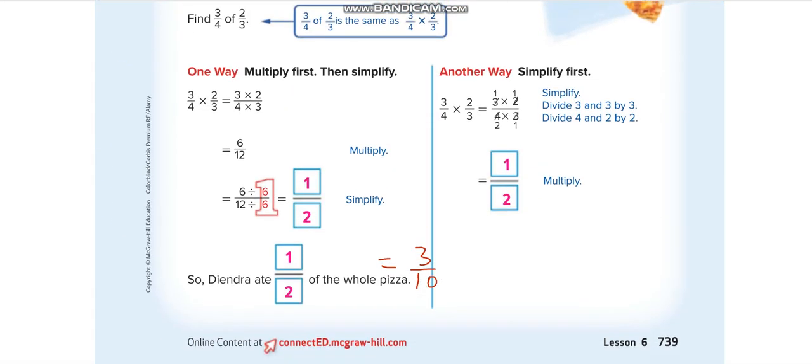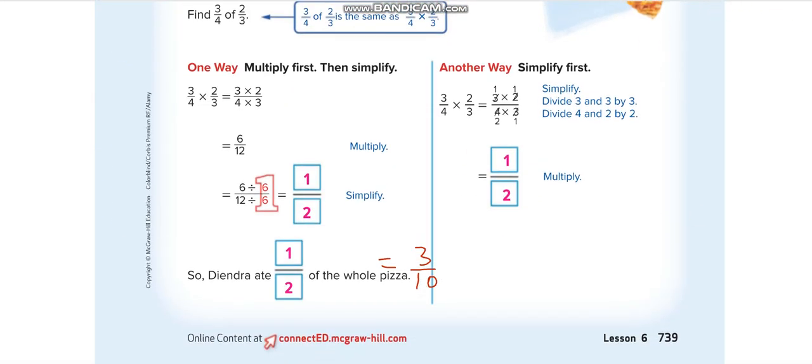They are telling you two ways here. Let me tell you all of them. Here they have to multiply 3 over 4 times 2 over 3. Multiply the numerators with the numerator and denominator with the denominator: 3 times 2 is 6, and 4 times 3 is 12. Then we can simplify this: divide by 6. 6 divided by 6 is 1, and 12 divided by 6 is 2.